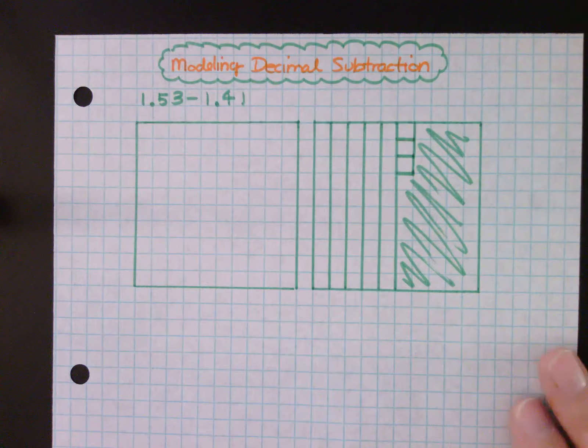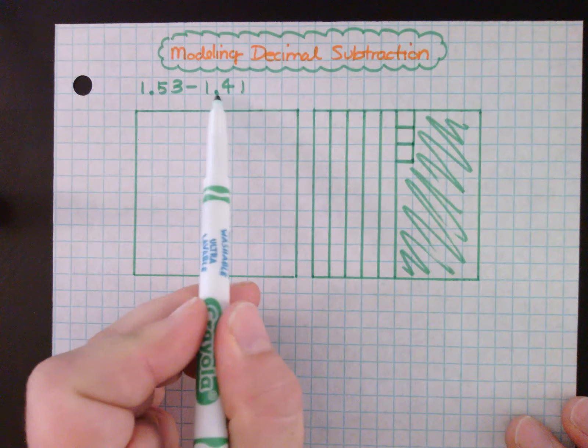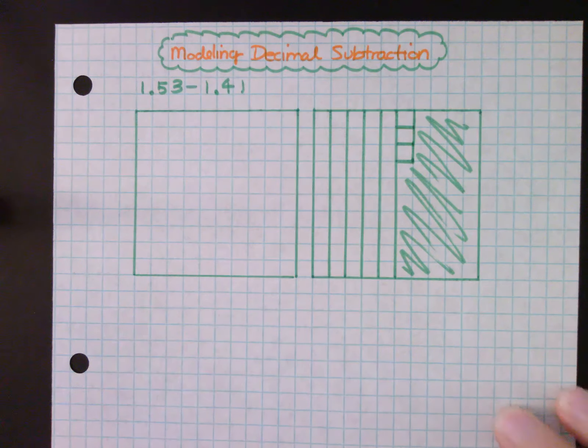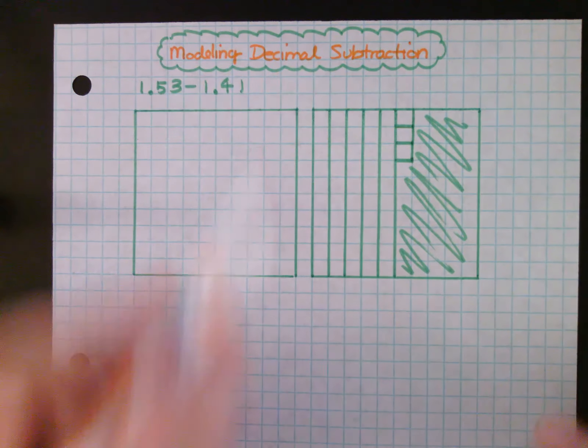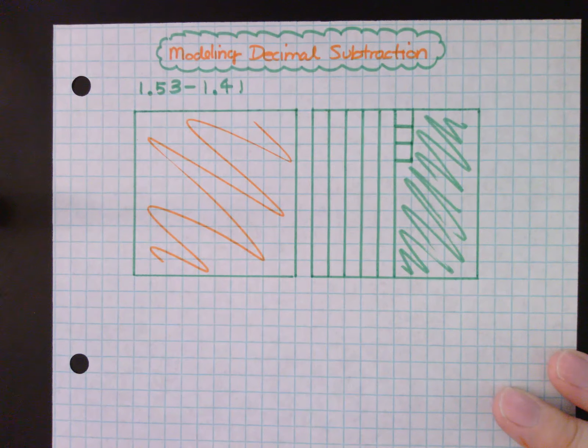So the rest of this I'm not using. Now I want to subtract 1.41. That means I have to get rid of one whole. Well, here's one whole, so I'm going to use a different color for this. Let's subtract one whole.